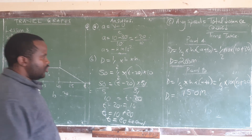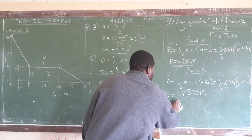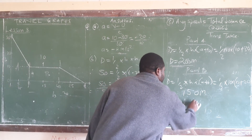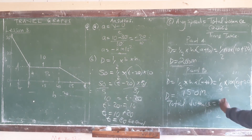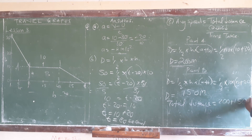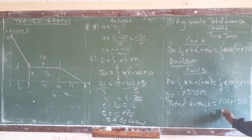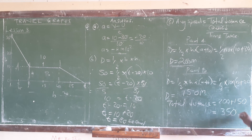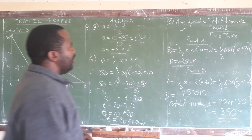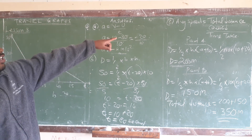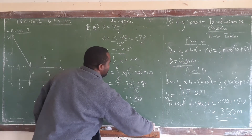Total distance is the sum of both parts: 200 plus 150 equals 350 meters. So our total distance is 350 meters. Now that we have our total distance, we can proceed to calculate the average speed.